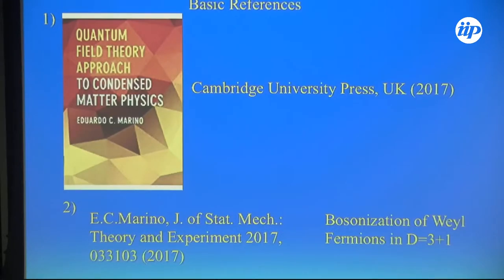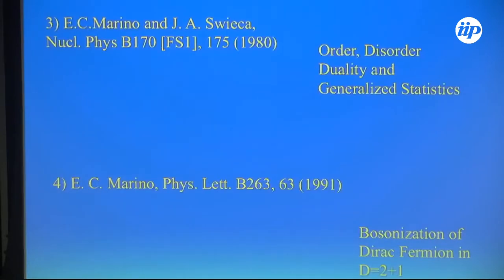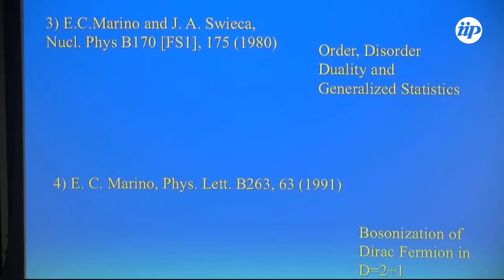The basic references for this talk are my book published in 2017, and this paper specifically about bosonization of Weyl fermions, also from 2017. My PhD thesis work introduced the relation between order, disorder, duality, and generalized statistics — two years before Wilczek did it under the name of anyons. There is also this application about bosonization of Dirac fermions in two spatial dimensions.